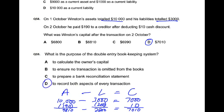One transaction has two aspects: a debit and a credit. This is double entry — an accounting concept known as the dual aspect concept.